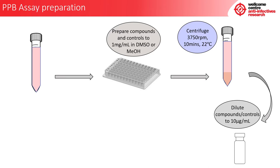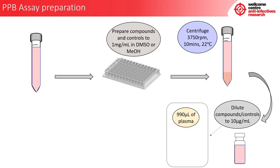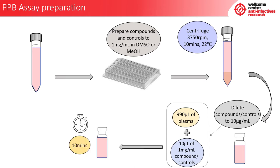Next, we are going to dilute our compounds and controls to 10 micrograms per ml. To do this, take out as many 7 ml vials as needed — for example, if we have 6 compounds and controls in total, we will need 6 vials labelled 1 to 6. Add 990 microlitres of supernatant plasma to each vial, then add 10 microlitres of our 1 mg per ml compounds or controls to the relevant vials — for example, compound 1 goes into vial 1 and so forth. These vials will then be left on the bench for 10 minutes to equilibrate.